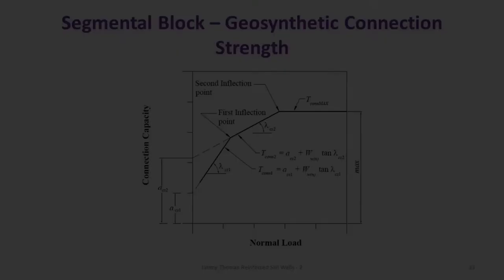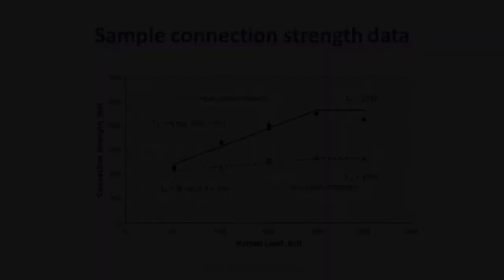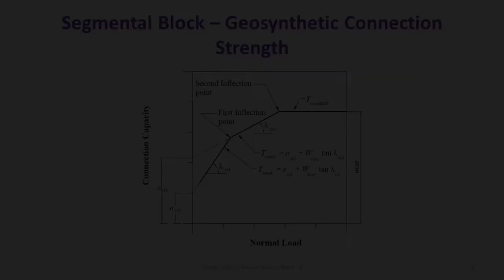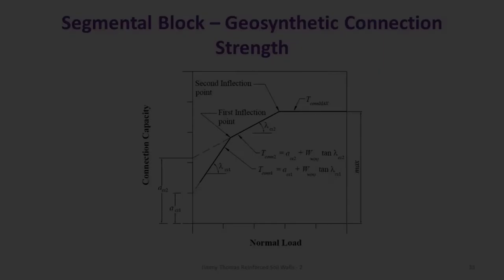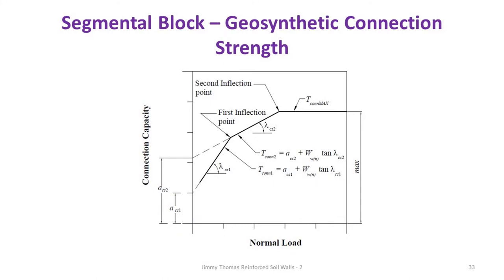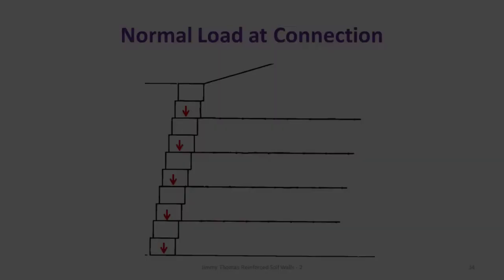Finally, the actual data is approximated as either bilinear or trilinear curves. When the normal load — corresponding to the wall height — is in a lower range, I use one portion of the curve; when the height is more, I use another portion; and beyond that there is a limiting value. Using these formulas, I can calculate the connection capacity.